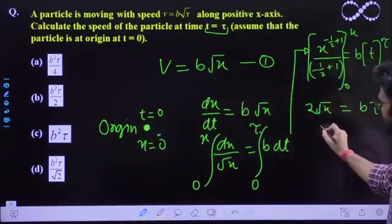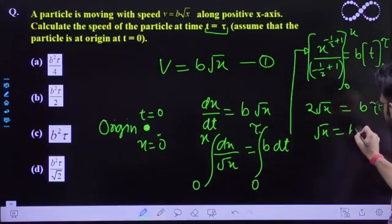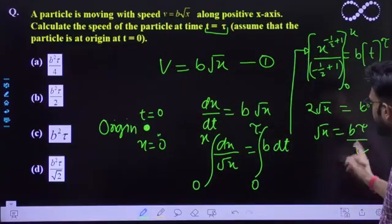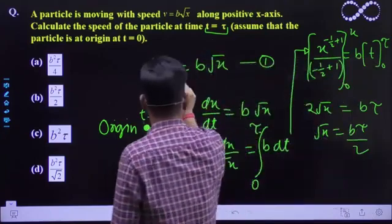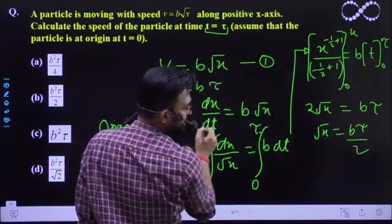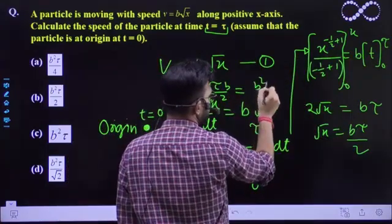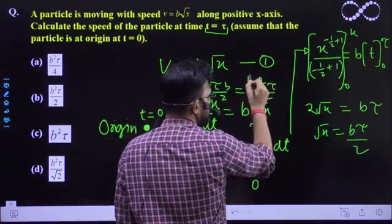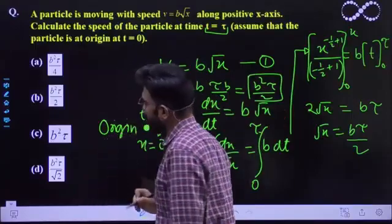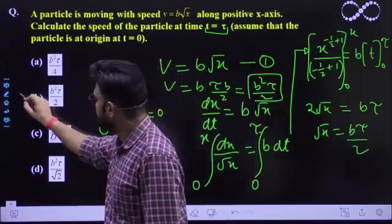So abh jaldi se weh root x ki value put karengi hain se. Root x is nothing but b tau by 2. Iske value here put kar do. What you'll be getting? v is nothing but b tau by tau into b by 2. So it comes out to be b square tau by 2. So this would be your correct option. So let us see which option is correct. So b would be the correct option.